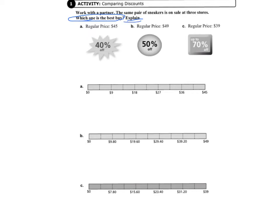Store A, the regular price is $45, and they're offering the sneakers at 40% off. Store B, the regular price is $49, and they're offering the sneakers at 50% off. And Store C, the regular price is $39, and they're offering the sneakers at up to 70% off.